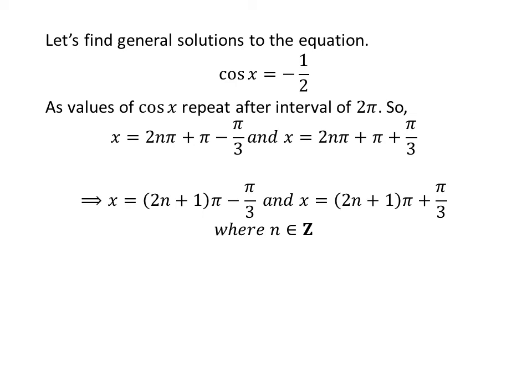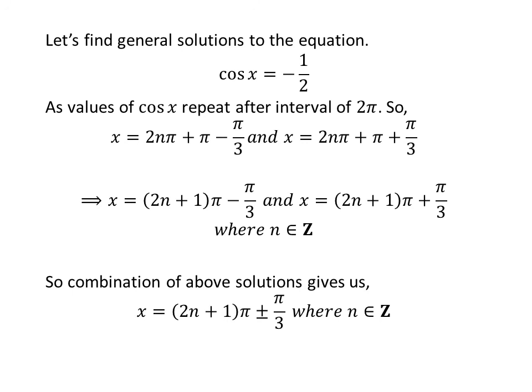After simplification, the general solutions are 2 times n plus 1 times pi minus pi upon 3, and 2 times n plus 1 times pi plus pi upon 3. Combining these gives the general solution: 2 times n plus 1 times pi plus or minus pi upon 3, where n is an integer.